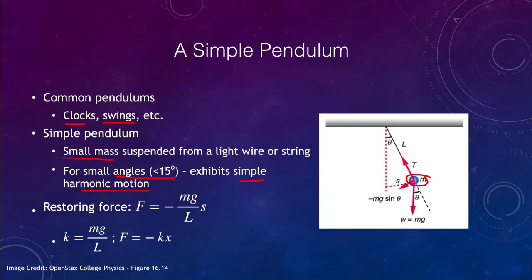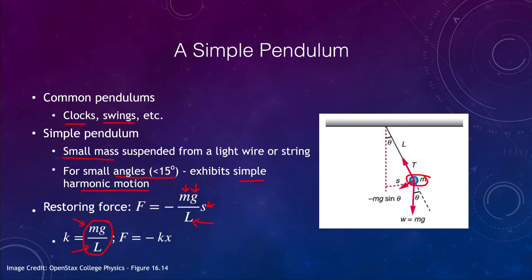For the pendulum, the restoring force is given by F equals mg divided by L, multiplied by the displacement x. You might recognize this looks very much like F = −kx, where k is now mg divided by L. So if we know the mass and the length of the string, we can calculate the force constant for the pendulum. Of course it also depends on g — on the surface of Earth, g is 9.8 meters per second squared.